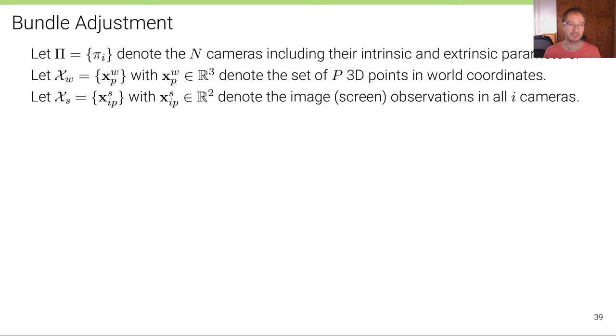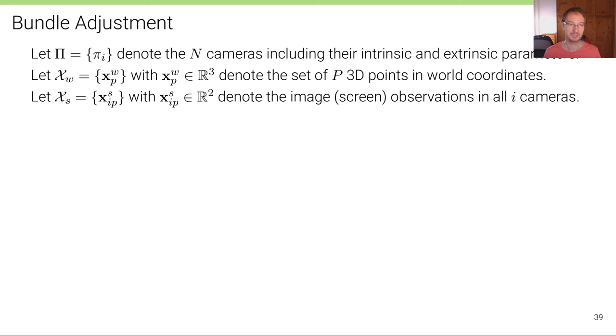So let's define this process formally. And the process is called bundle adjustment in computer vision. So that's very related to this bundle adjustment type SLAM. Let Π denote the set of all the N cameras. And we're going to use that notation to also refer to the intrinsic and extrinsic parameters. When we speak of Π, it's not just the projection function, but we also refer to the parameters themselves.